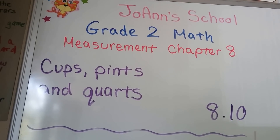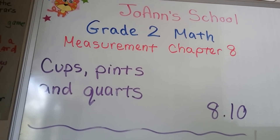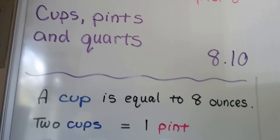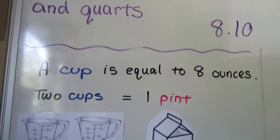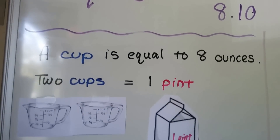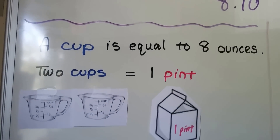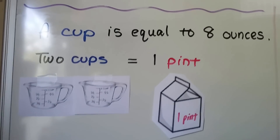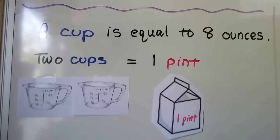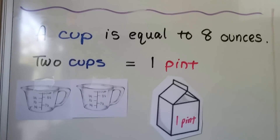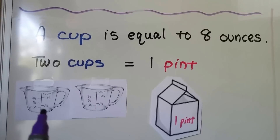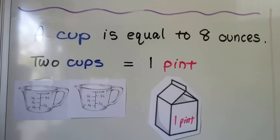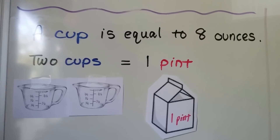Cups, pints, and quarts. Lesson 8.10. A cup is equal to 8 ounces. So one of these measuring cups here is equal to 8 ounces, but we're going to learn more about that when we get into fourth grade.